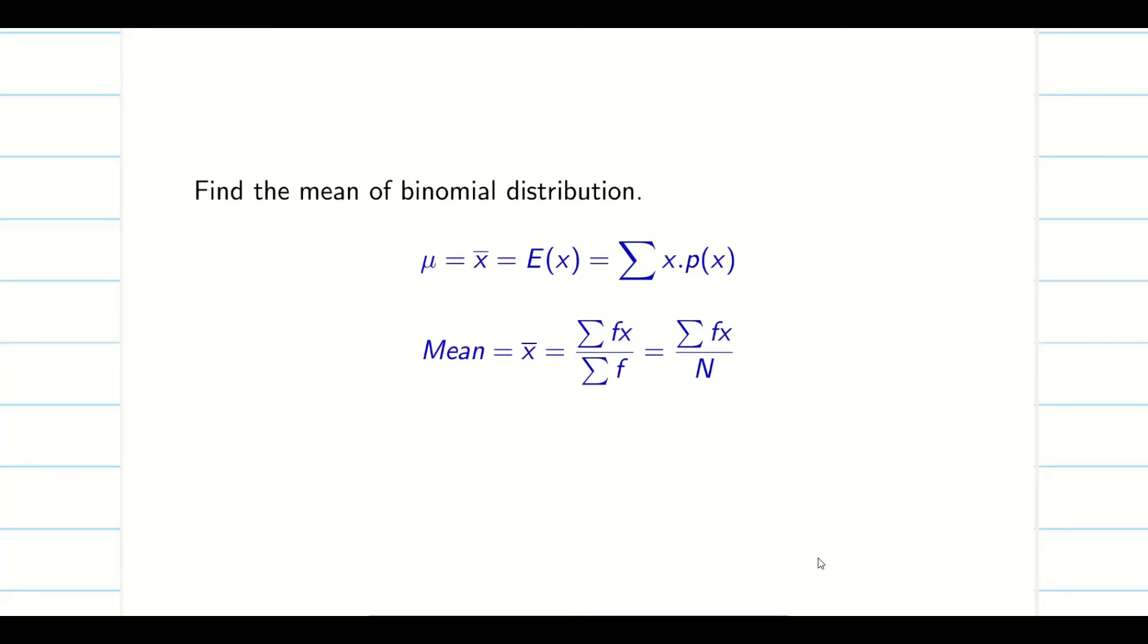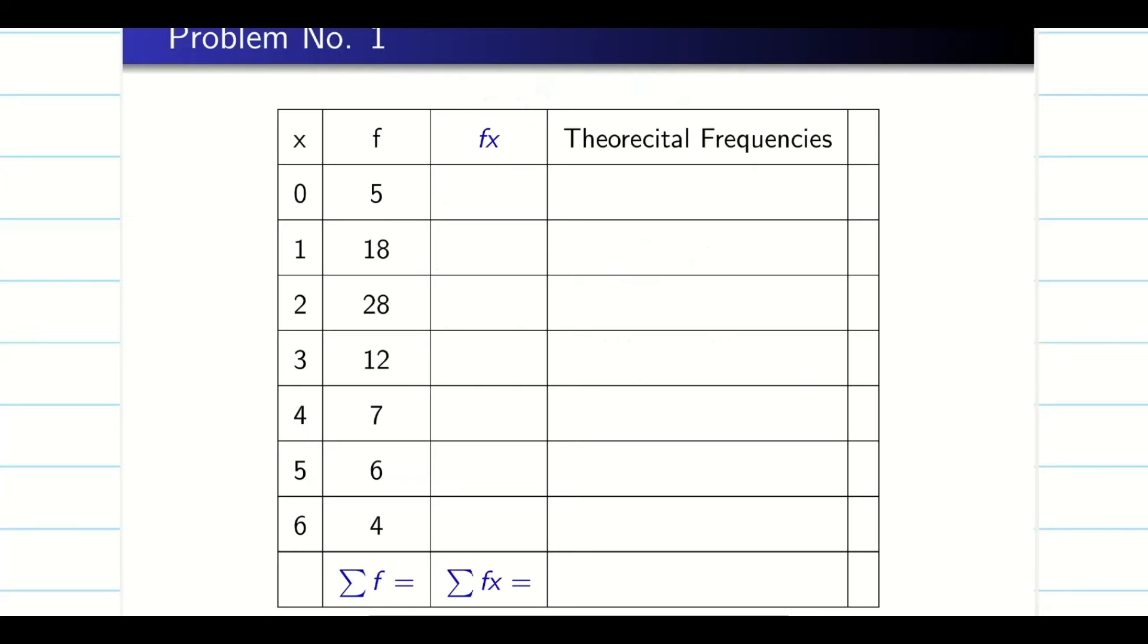And in some books, people notate sum of frequencies capital N. Sum of frequencies capital N. So either you say summation F or N. That is good. So now a simple table will clear your problem. So first column, the chances. Second column, the corresponding frequencies. Now at the end, if you add, you will get summation F.